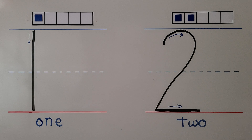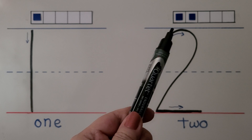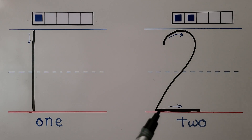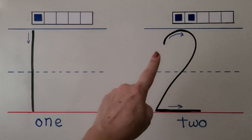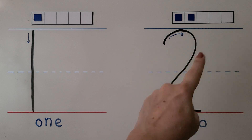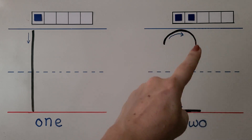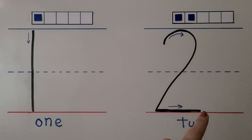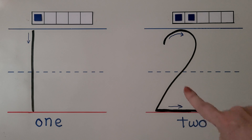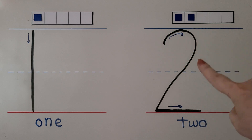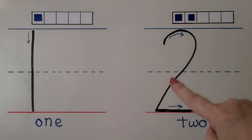For the number 2, we start here. We curl around down to the line and go to the side. You can do it with me. We start here, come around to the bottom and go off to the side like that. For right-handed students: we start here, come around and go off to the side. That's the number 2.